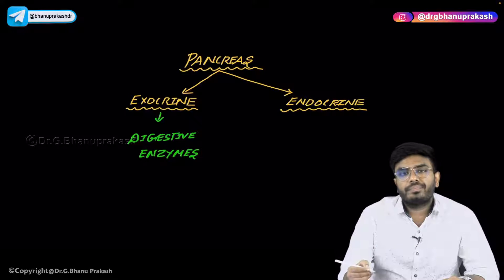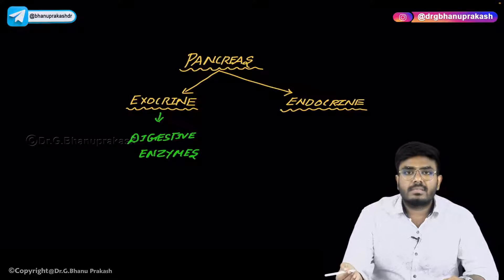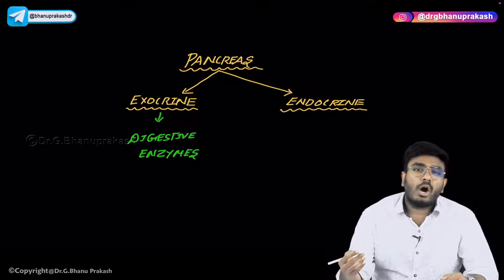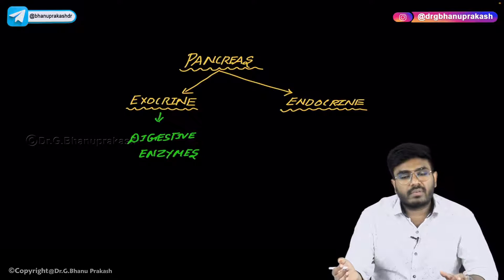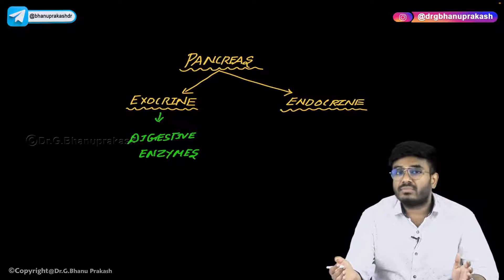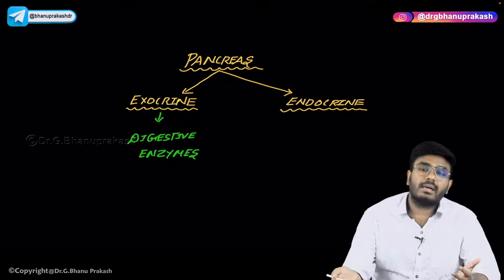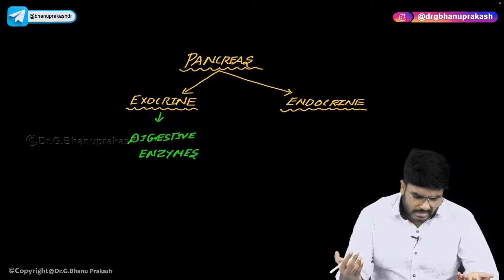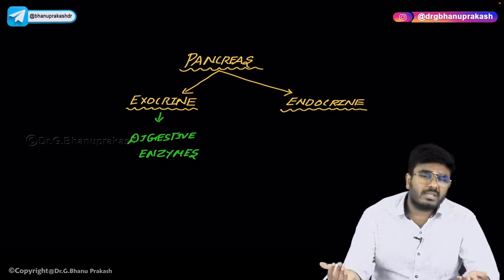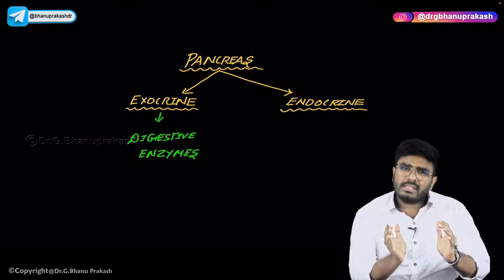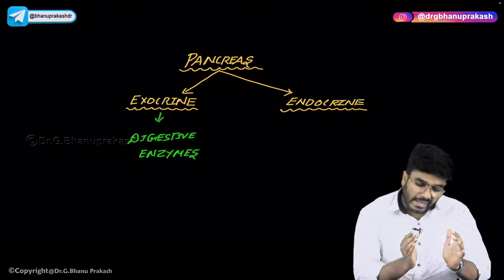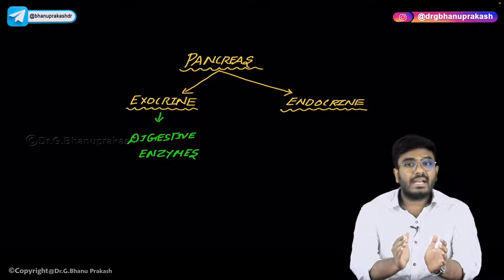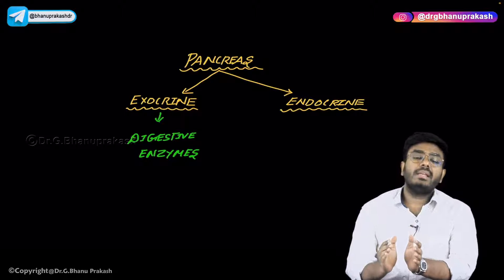There is production of pancreatic juices which are rich in bicarbonates, and pancreas produces all types of enzymes important for the digestion of carbohydrates, proteins, and fats. We have discussed pancreatic amylase, pancreatic lipases, colipases, trypsinogen, chemotrypsinogen, and carboxypeptidase. All these come under the exocrine function of the pancreas, so pancreas produces digestive juices which help in the digestion process.